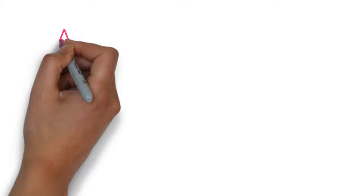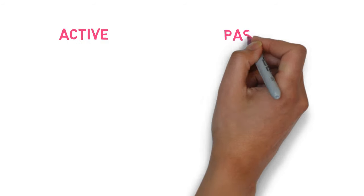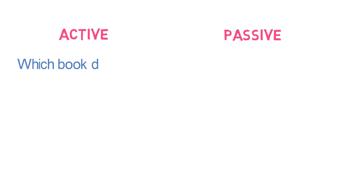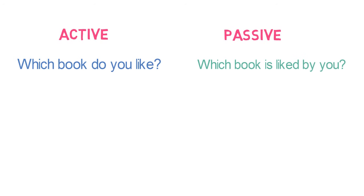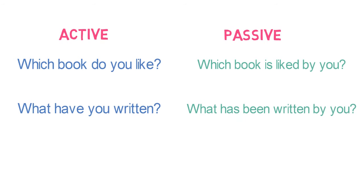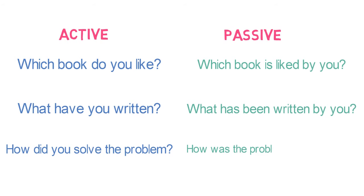Let's look into some more examples where the WH word is not being changed. 'Which book do you like?' — Converting it to passive, it becomes: 'Which book is liked by you?' Next: 'What have you written?' — Converting it to passive, it becomes: 'What has been written by you?' One more example: 'How did you solve the problem?' — Converting it to passive, it becomes: 'How was the problem solved by you?'